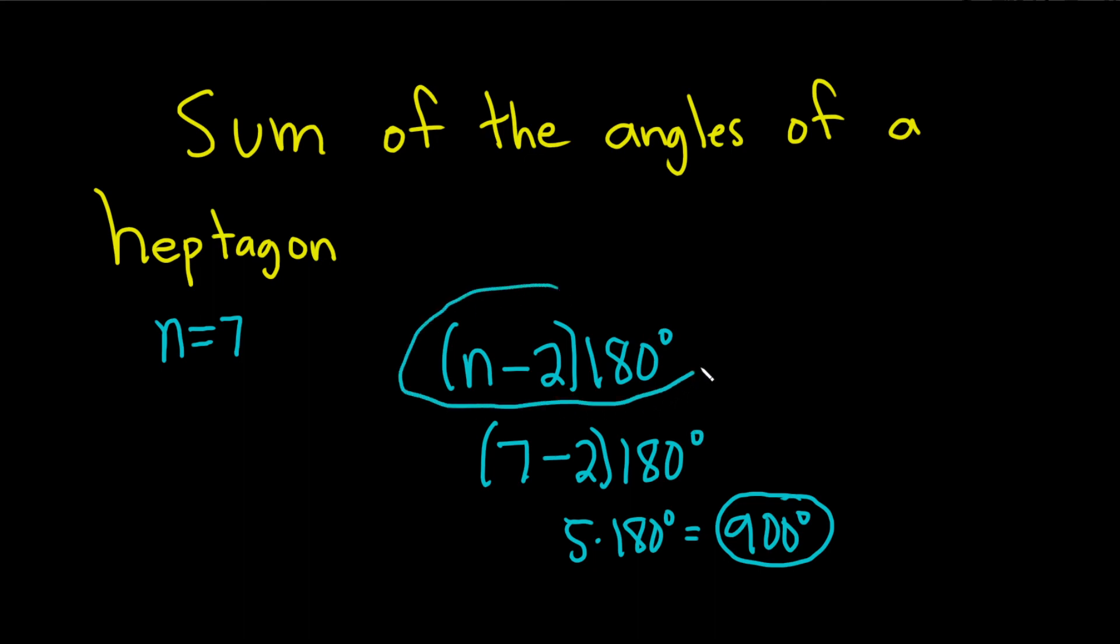So basically you just memorize the formula. This is the sum of the angles of an n-gon. And then this is a heptagon, so n is 7. So you do have to memorize that as well. And then you just plug it in.